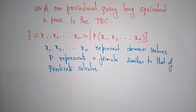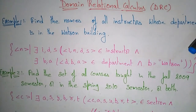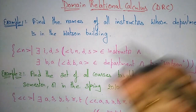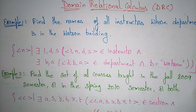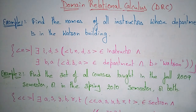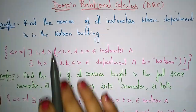Let me take some examples for domain relational calculus. First example: find the names of all instructors whose department is in the Watson building. This is the same example explained in TRC, but the difference is only in the query expression we are writing. In DRC, I'm selecting exactly the domain values I want.